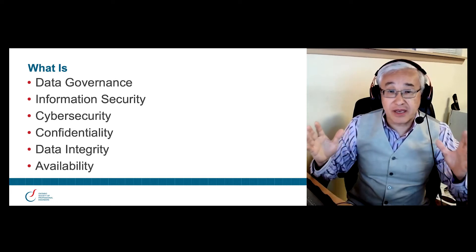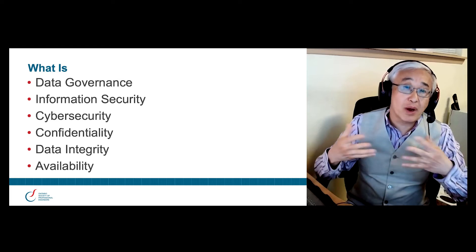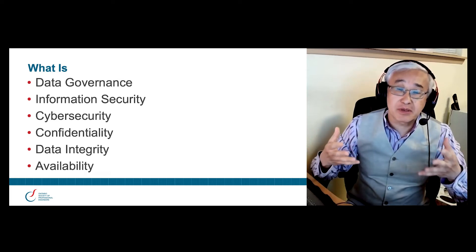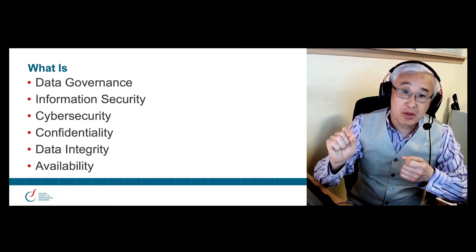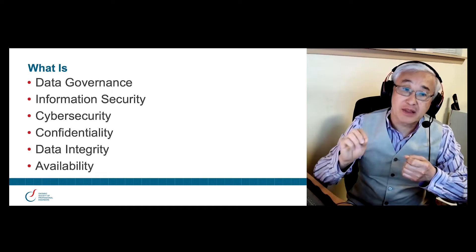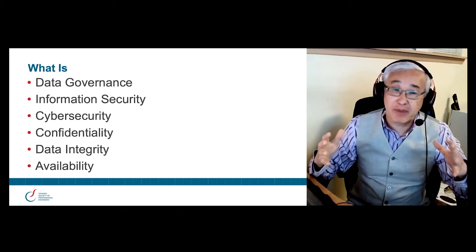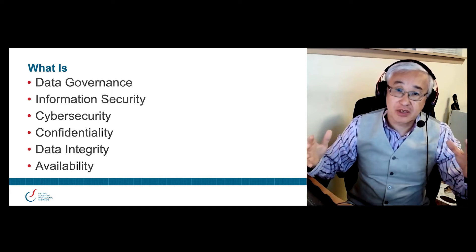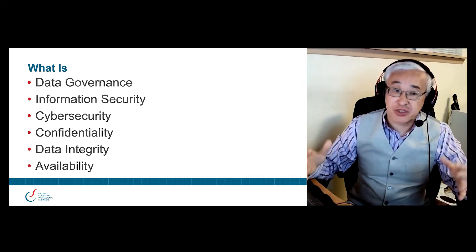Next is availability. Availability means that data is available to authorized people when they need it, where they need it, and in the format that they need it. So we have just talked about the very basic concepts of information governance and some very basic definitions relating to information security.